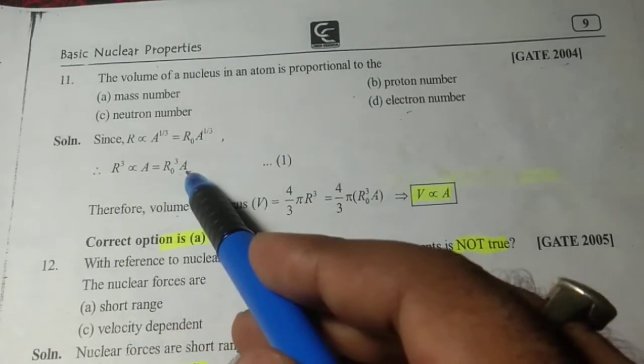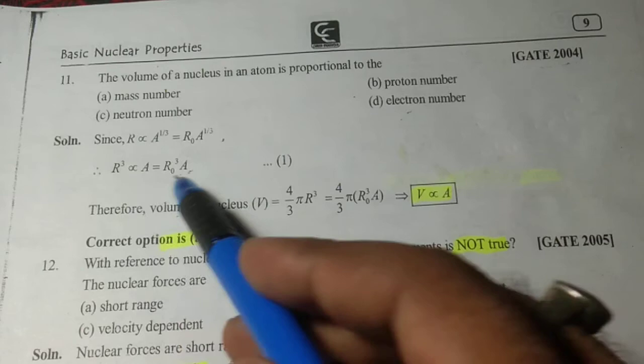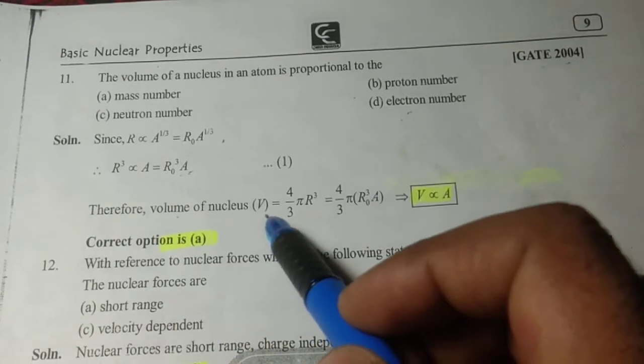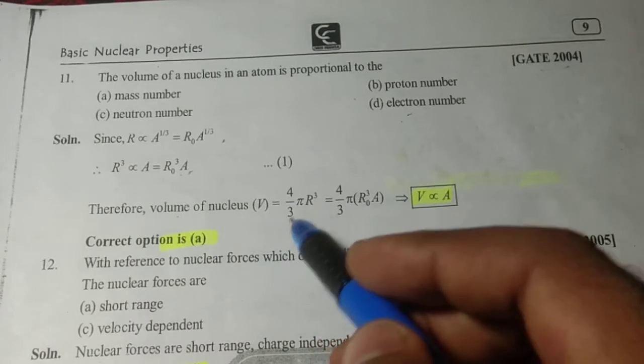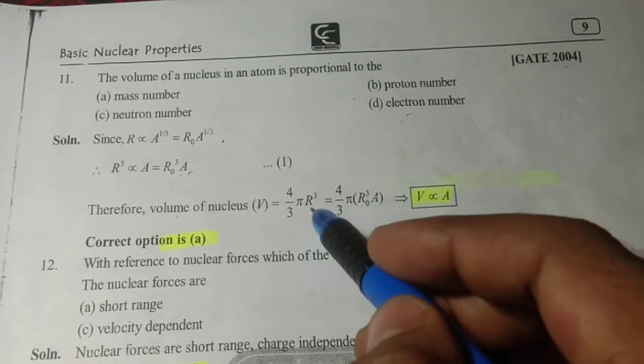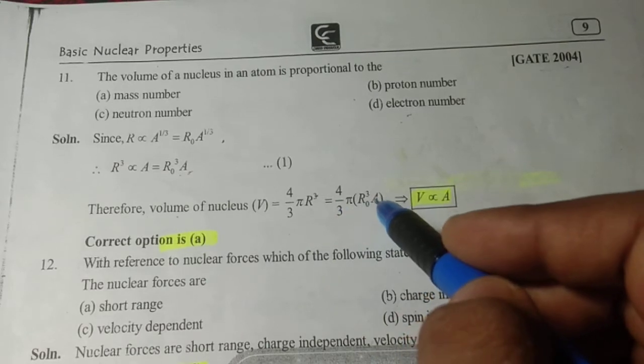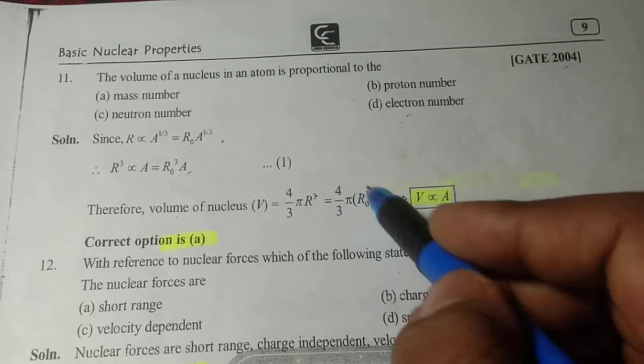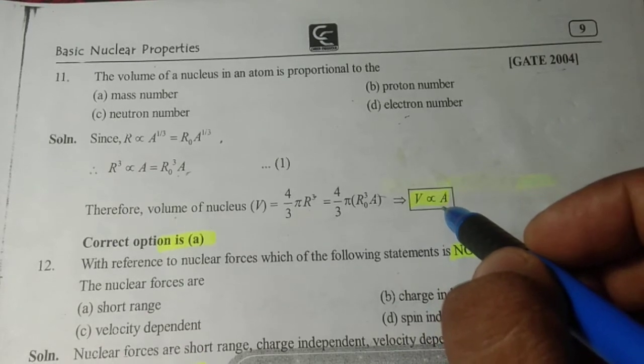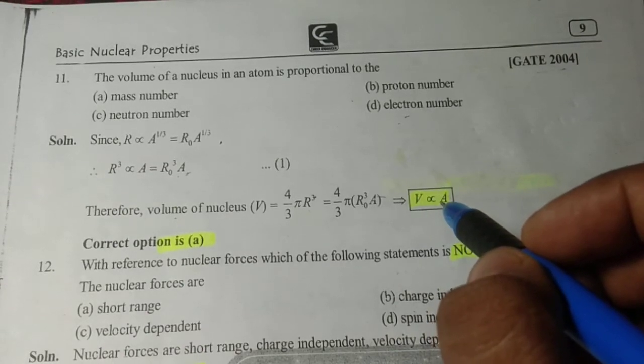From this, after cubing both sides, the volume of the nucleus equals (4/3)πR³, which is (4/3)πR₀³A. This directly indicates that volume is directly proportional to A, the mass number. So the correct option is (a).